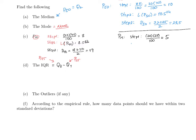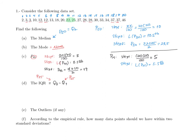Since step one gave a whole number, the location of P25 is 5.5. Location 5.5 is between positions 5 and 6, which both happen to be 12. So P25 = 12 plus 12 divided by 2, which is just 12.